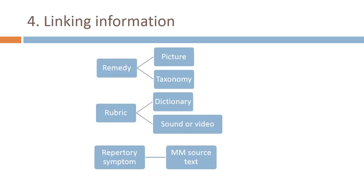Information has been linked — the remedy is not just an abbreviation in the book, but has been linked to a picture and to the taxonomy of the remedy. The rubric is not just text; it has been linked to a dictionary explanation or even to a sound or video clip explaining that rubric. And most of all, the repertory symptom has been linked to the source text in the Materia Medica, so that the remedy in a certain rubric clearly shows the context and precise meaning.